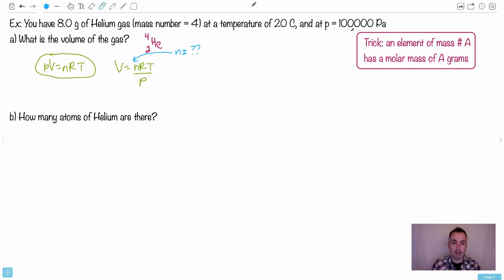If you have an element of mass number A, in this case four, then it's going to have a molar mass of A grams. What that means is that one mole of that material will be four grams.